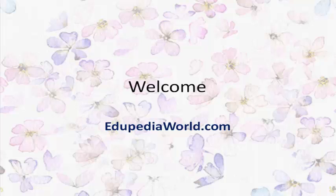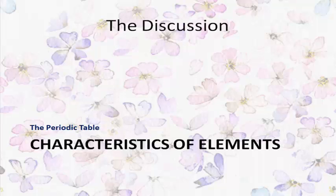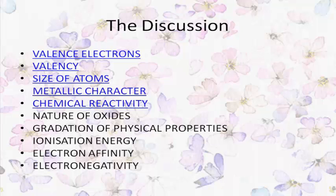Hello and welcome to edupediaworld.com, your destination to online education. From the past few sessions, we are continuing with the characteristics of elements with respect to groups and periods in the modern periodic table. So far we have already covered valence electrons, valency, size of atom, and metallic character of the element. So today in this session, we shall start with chemical reactivity of the element with respect to periods and groups.